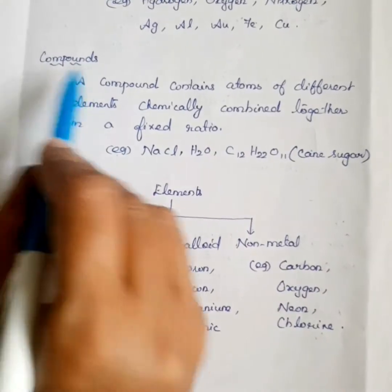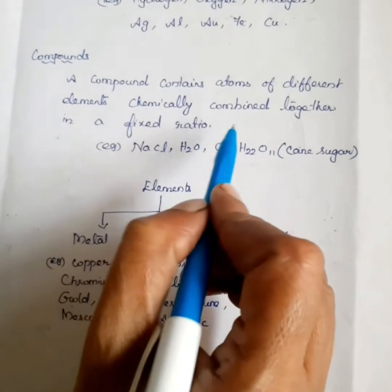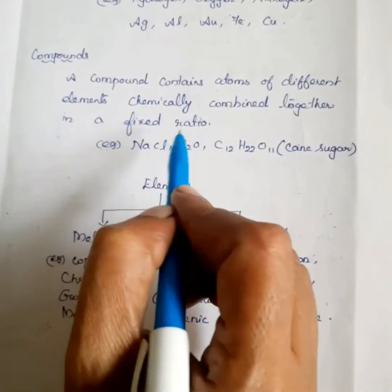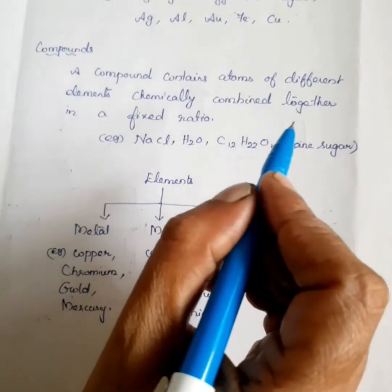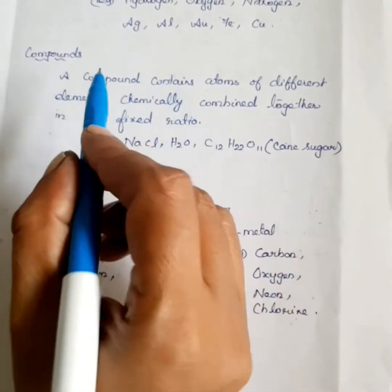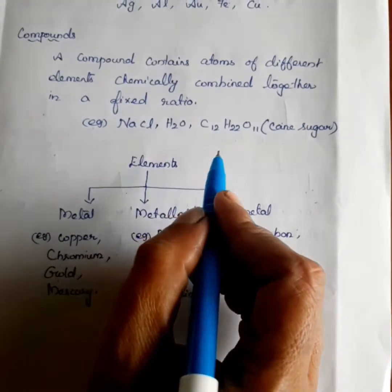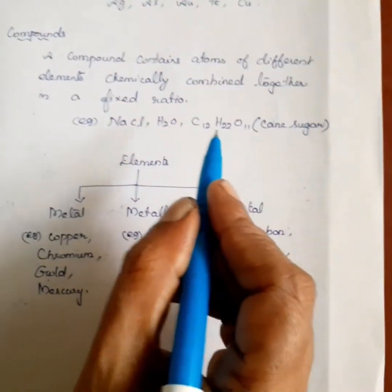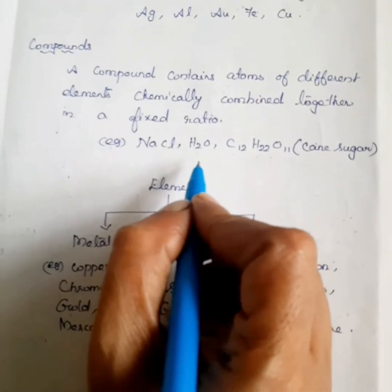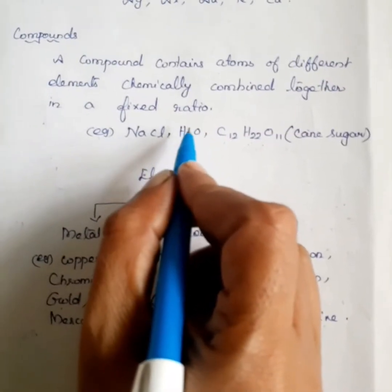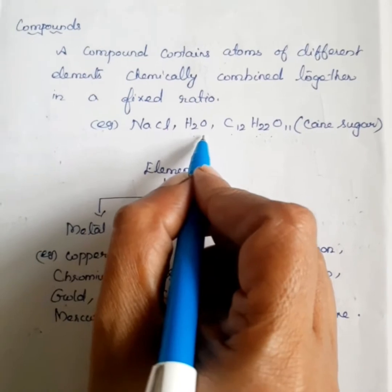Now we discuss about compound. A compound contains atoms of different elements chemically combined together in a fixed ratio. Two or more elements combined together form a new substance called a compound. For example, the chemical formula of water is H2O. It contains two elements — hydrogen and oxygen — combined together to form water.